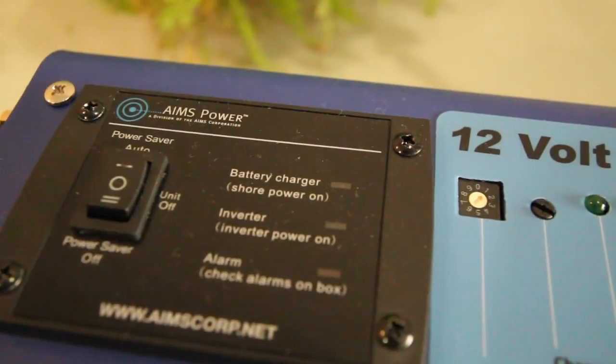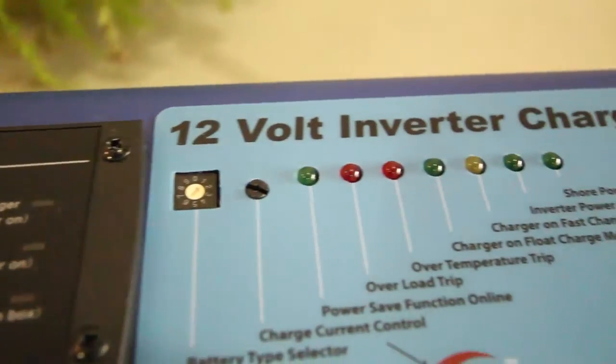Taking a look at the top of the unit, this is where you'll find the on off switch, power save mode, and the battery type selector.